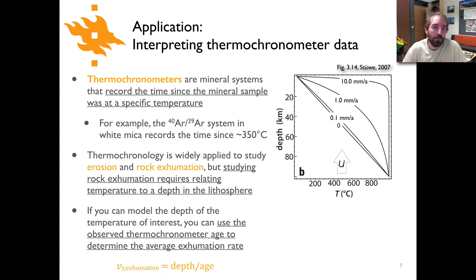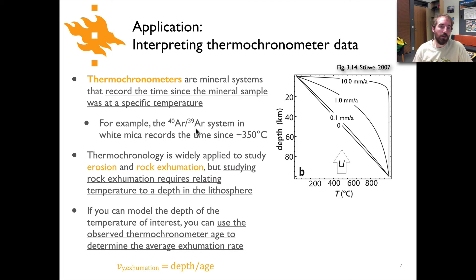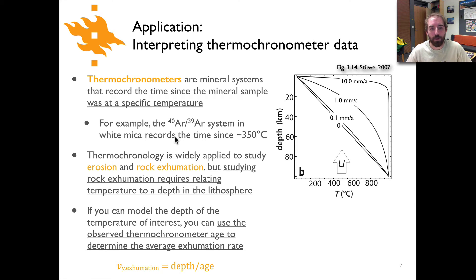To give an idea of a case where rock advection is important, we can consider thermal chronometer data. A thermal chronometer is a mineral system that records time since a rock or mineral was at a specific temperature. For example, analyzing the abundance of argon-40 to argon-39 in micas gives a time corresponding to when the rock was at about 350 degrees C within the crust.